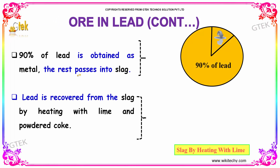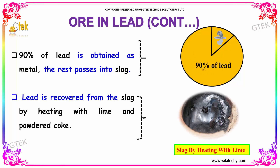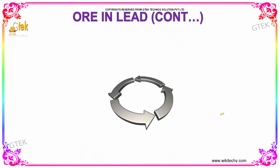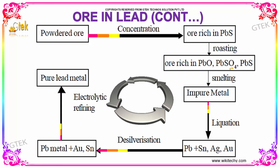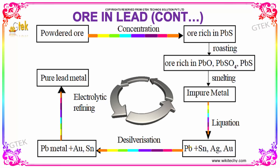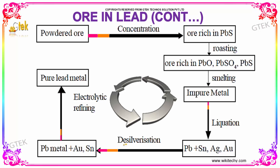About 90% of lead is obtained as metal; the rest passes into slag. The lead is recovered from the slag by heating with lime and powdered coke. In the overall process, the powdered ore is concentrated — an ore rich in lead sulfide is roasted to become lead oxide, lead sulfate, and lead sulfide. On smelting, impure metal is obtained, and through liquation, lead with tin, silver, and gold is separated. Desilverization removes the silver, and electrolytic refining yields pure lead metal.